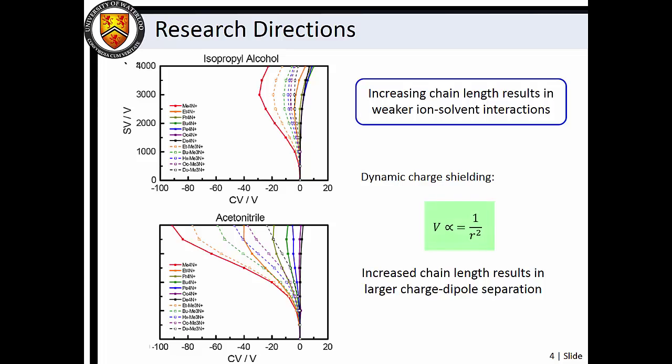Since the ion-solvent interactions are dominated by the charge-dipole interaction, by increasing the alkyl chain length, we are also increasing the average separation between the interacting solvent molecule and the charged nitrogen center. This reduces the binding energies of the ion-solvent clusters that are apparently forming in the DMS cell.